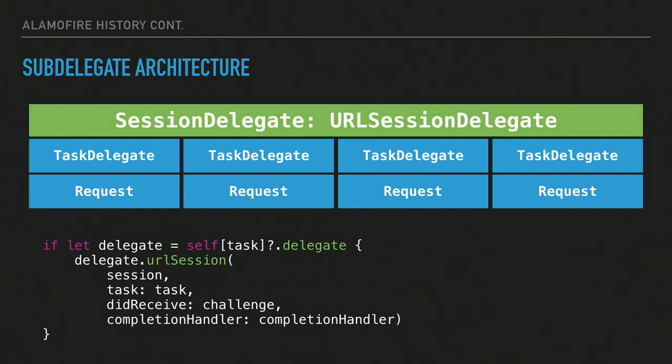The subdelegate architecture is really the separation of the URL session delegate methods into two sides: one would be the global URL session delegate, of which there is one, and then there would be the task delegate, which implements all of the task delegate methods — one of those is created for every request. Every time we got a delegate callback, we had to find out which task delegate the method should go back to. This separation and duplication led to problems later in Alamofire's development.